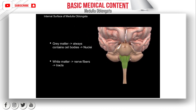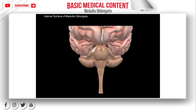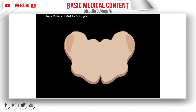Now let's cover the internal surface of the medulla oblongata. The internal surface consists of two parts: the gray matter and the white matter. Gray matter always contains cell bodies — when we talk about gray matter, we're talking about nuclei. White matter always contains fibers, which form tracts. The internal surface of the medulla differs along the superior and inferior parts. If you cut the medulla at different regions, you will find different structures. In this video, I'll slice at the superior part and talk about the most significant parts, highlighting which parts belong to which levels.